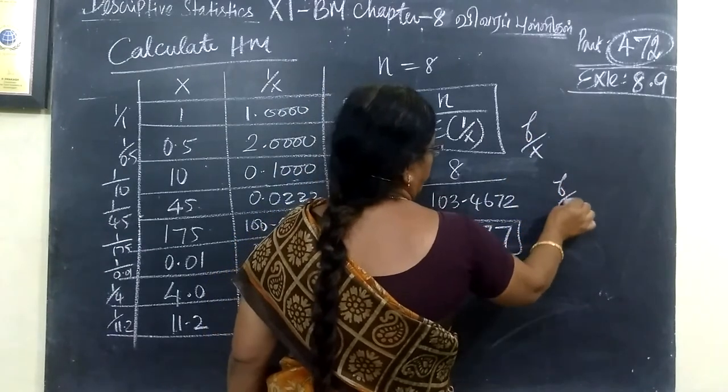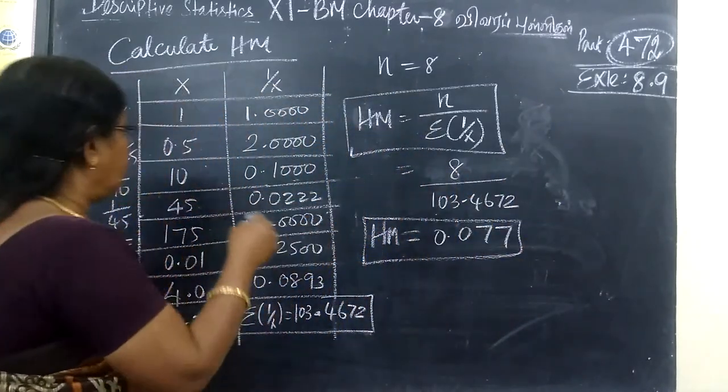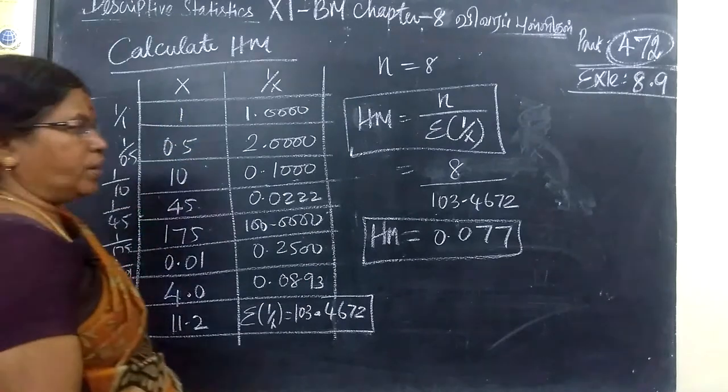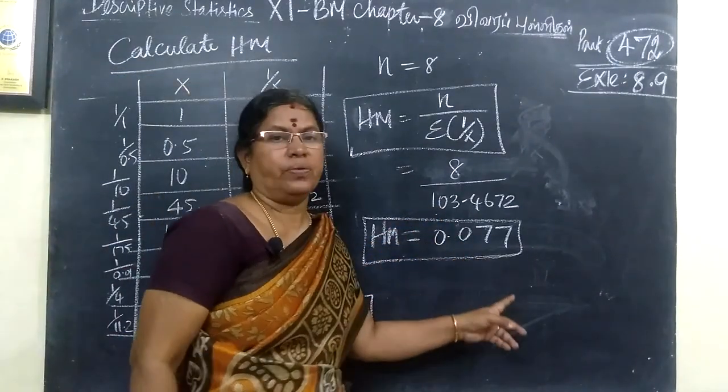F by M. The number of observations is 8. There are 8 values. So 8 by this answer, for this, 0.077.